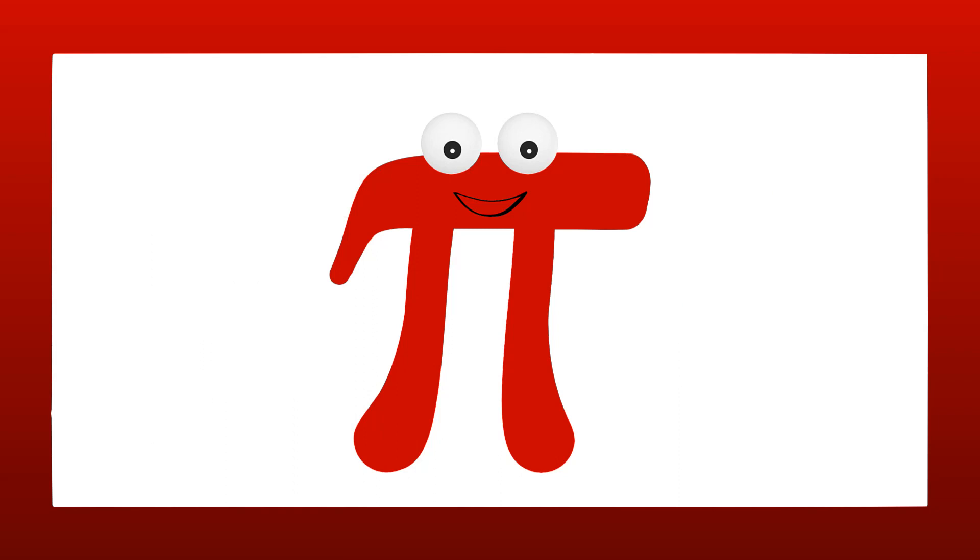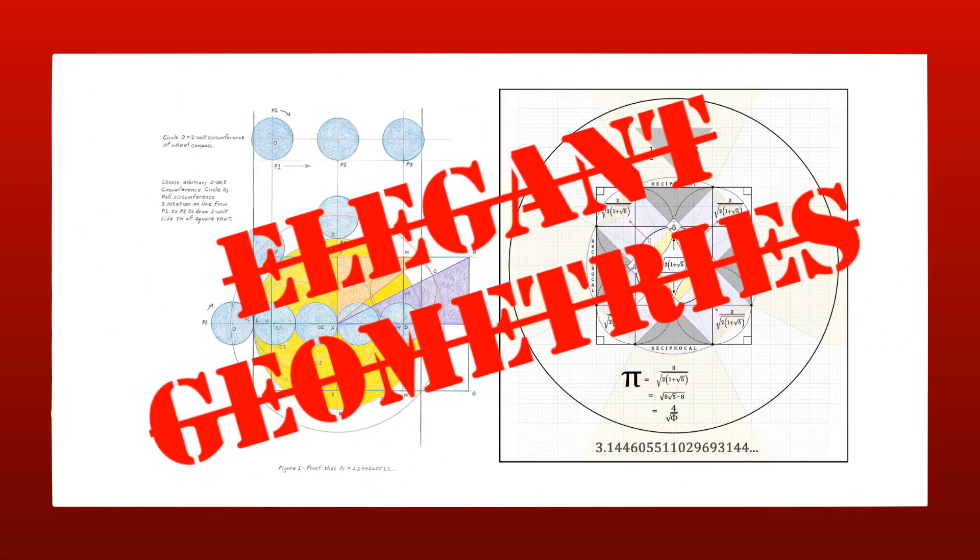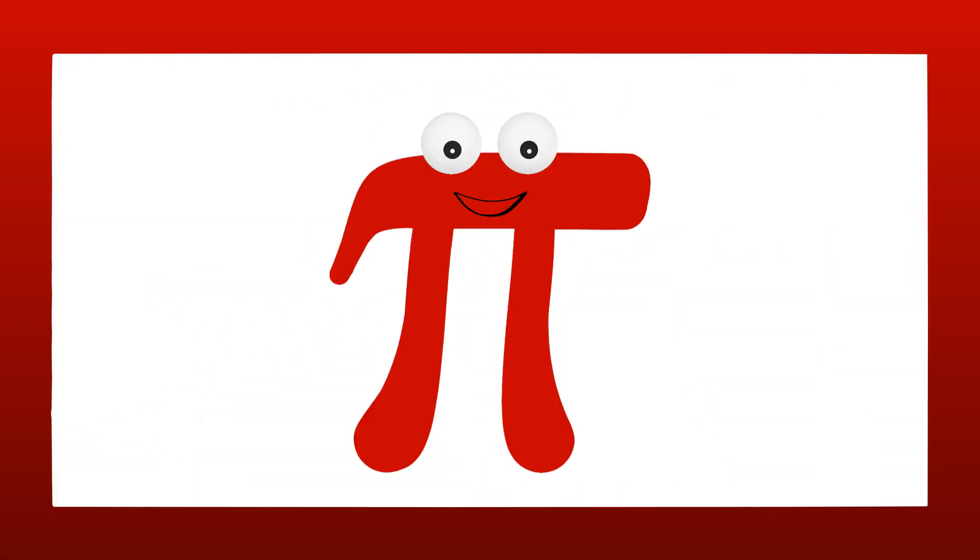So, I've created an incredibly simple solution that I think will show which of us is the true Pi. We're not going to use advanced mathematics. We're not going to construct elegant geometries. They're too time-consuming and too difficult to prove. Here's my plan.